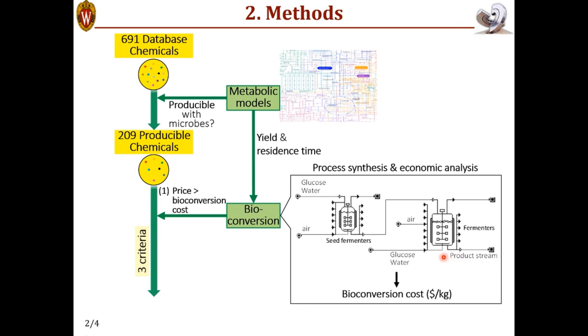The product stream we get here is actually very dilute. It could have only say 1% product, but in the end, we want a product that is 99% pure, for example.